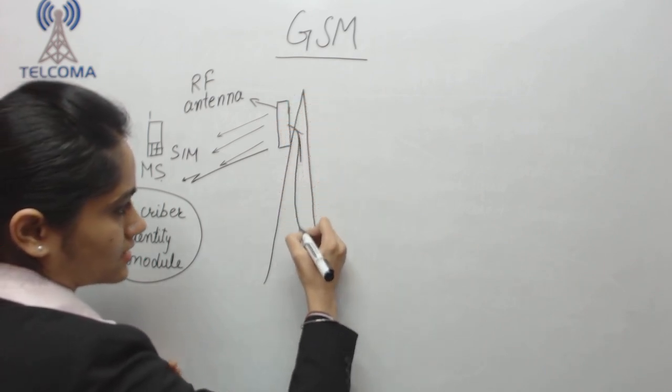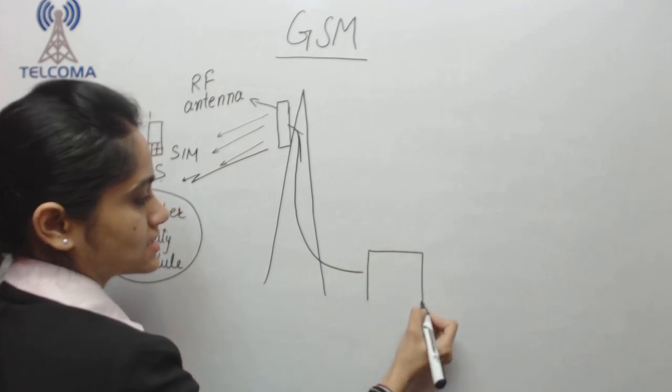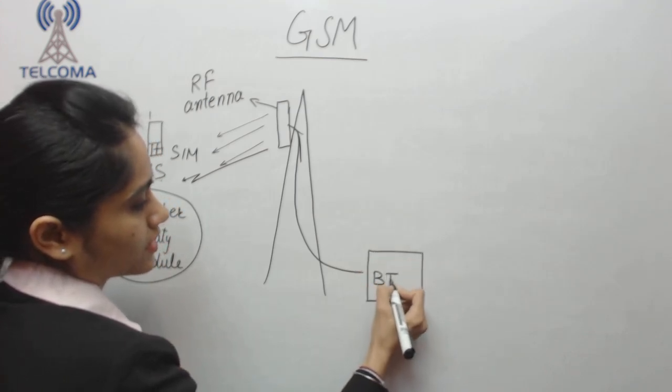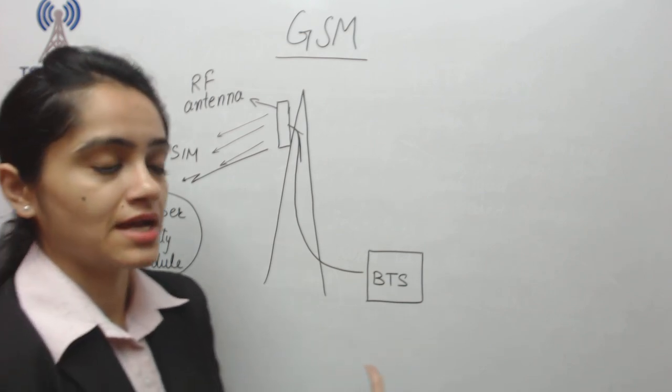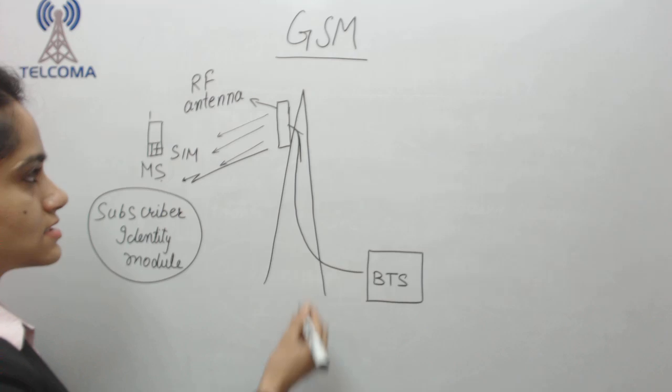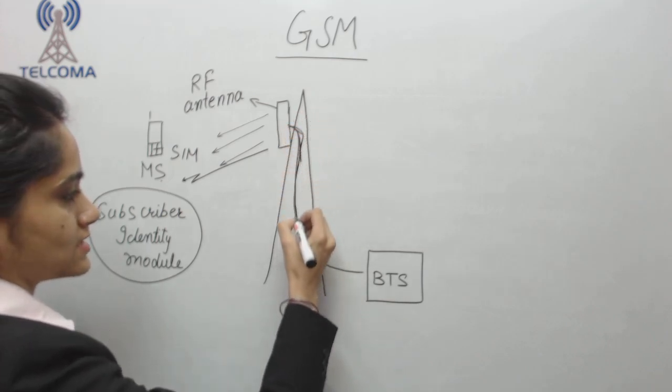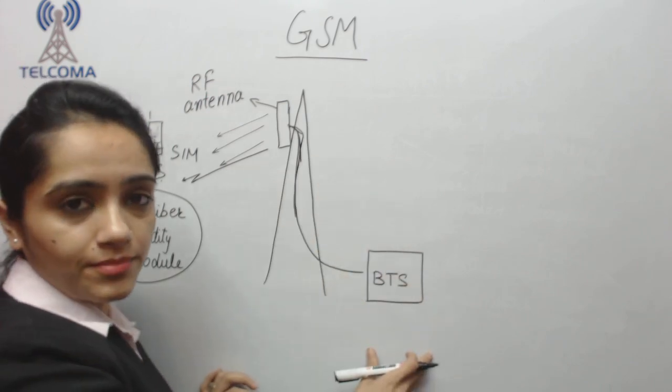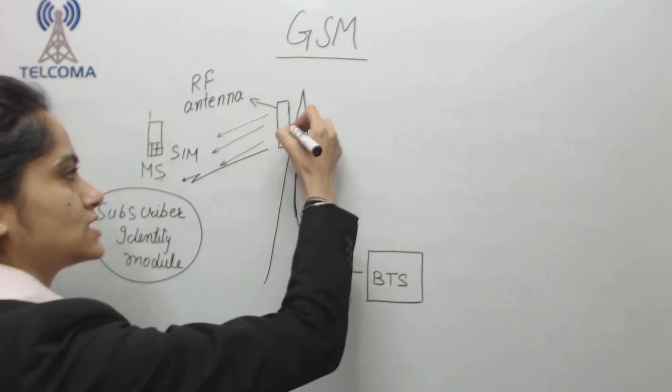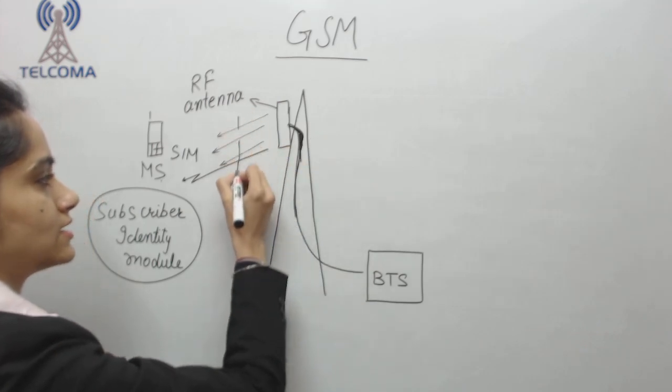This RF antenna is connected to a part which is called the BTS. As we discussed, in the BSS part we have BTS and BSC. This antenna is connected to BTS, that means all signals from various mobile stations will be passed to the BTS.